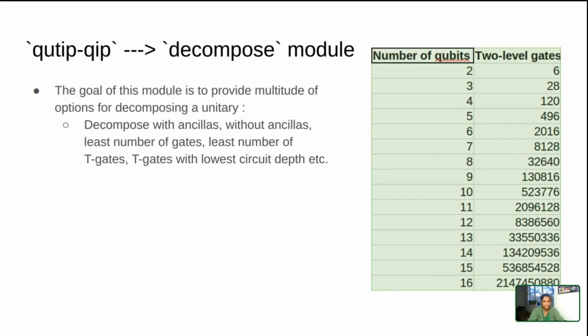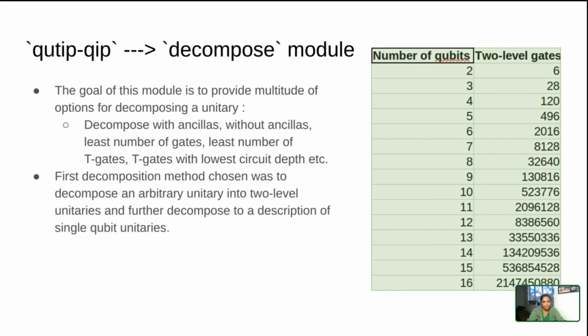The method I chose was to be able to decompose the d by d unitary into a description of two level unitaries, and the two level unitaries would be further decomposed into single qubit unitaries. You can see on the right, this table, as the number of qubits increases, the number of two level gates needed also rises, and that means that the single qubit unitaries will also increase in the same manner.